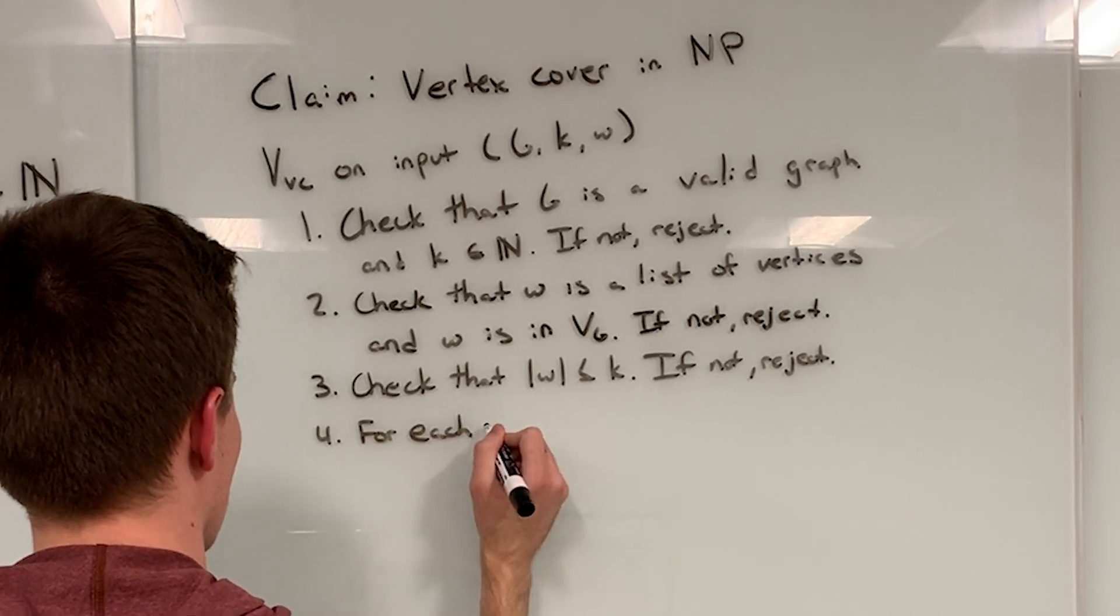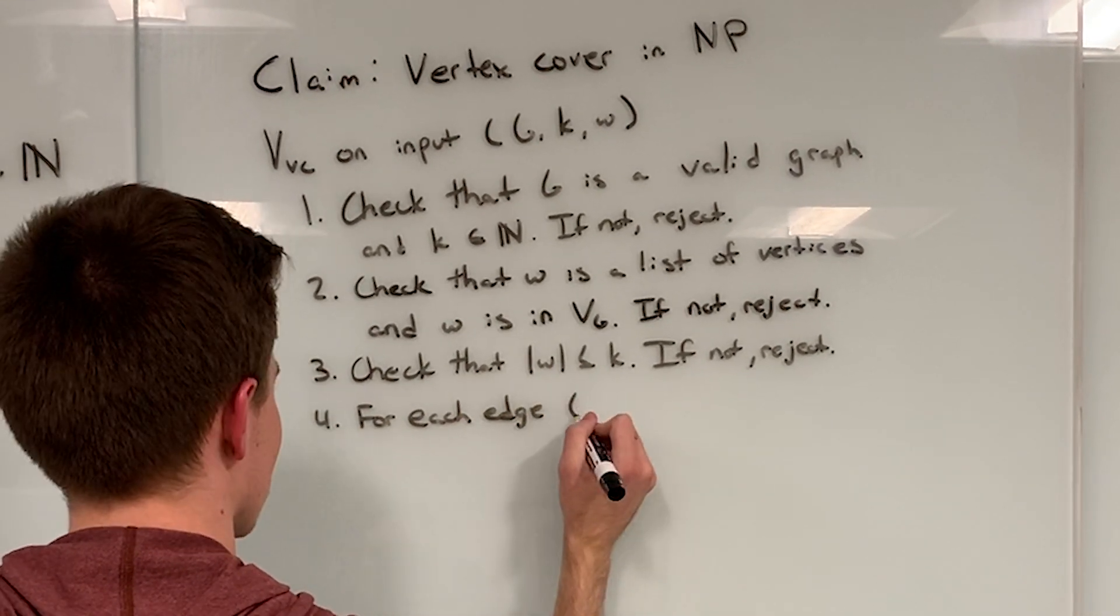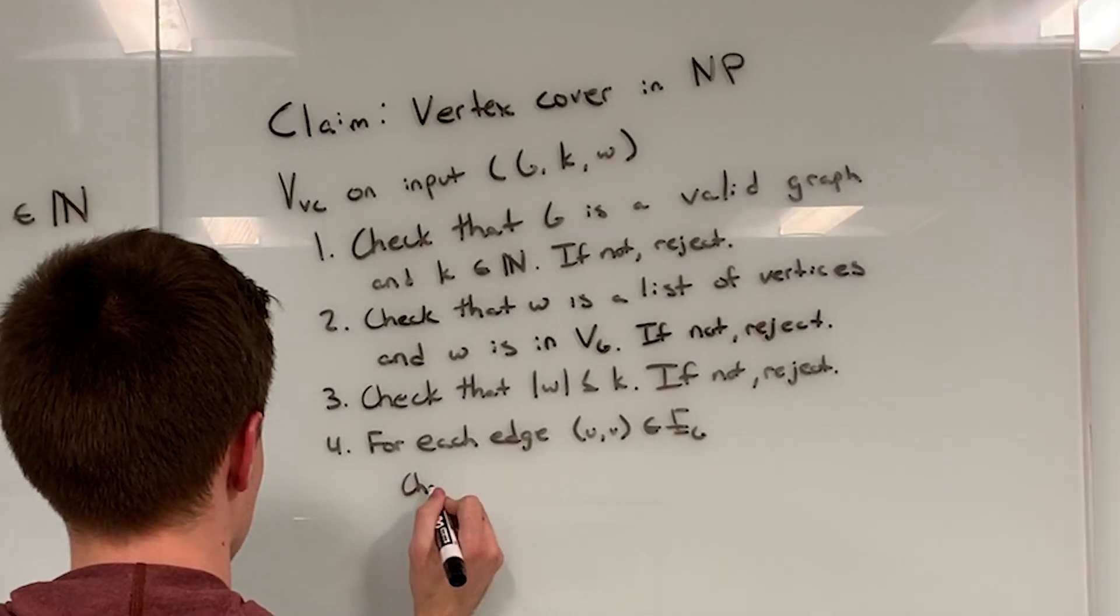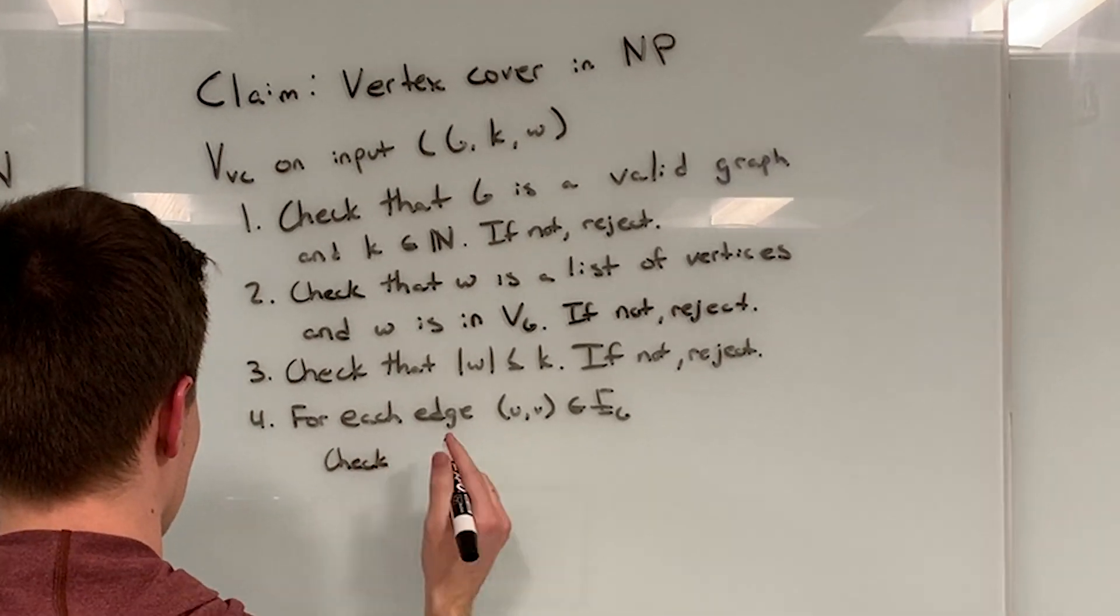If none of the above cases reject, we move on to step 4, which checks that every edge in the graph G is contained in W. If there is not an edge in G which is not contained in W, we reject.